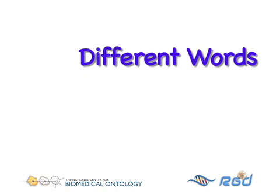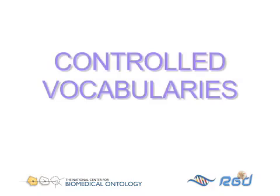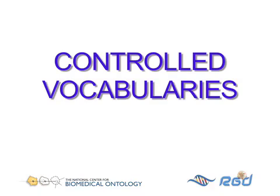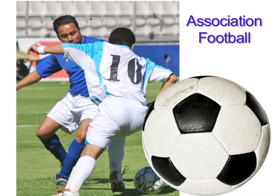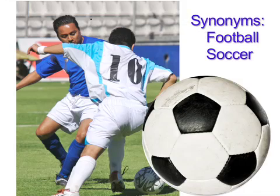One way of dealing with this problem is through the use of controlled vocabularies. In a controlled vocabulary, a particular concept is assigned a single official term, and any other terms that mean the same or very similar things are used as synonyms for that term. So this game might be officially referred to as association football, while the terms football and soccer could be used as synonyms.